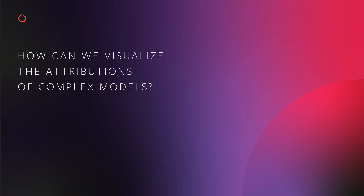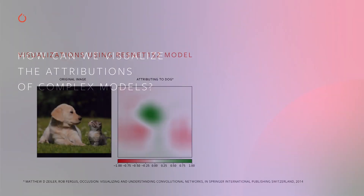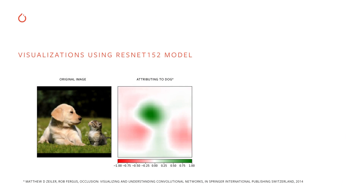Until now we were talking about simple toy models and GPU distribution. Now let's look into more complex models and see how we can apply Captum on those models and visualize attributions. In this example, we use a pre-trained ResNet-152 model and the occlusion algorithm to attribute to the dog class. Red pixels correspond to negative attribution — those pixels pull away from the dog class. White means those pixels do not contribute to the prediction, and green means those pixels are very important for predicting dog. The green pixels are concentrated on the head of the dog.